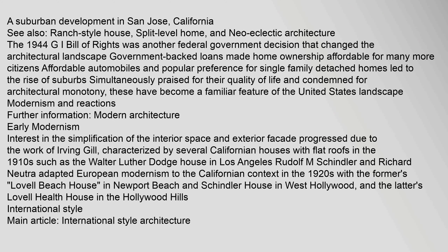The 1944 GI Bill of Rights was another federal government decision that changed the architectural landscape. Government-backed loans made home ownership affordable for many more citizens. Affordable automobiles and popular preference for single-family detached homes led to the rise of suburbs, simultaneously praised for their quality of life and condemned for architectural monotony. These have become a familiar feature of the United States landscape.